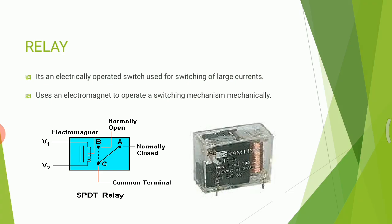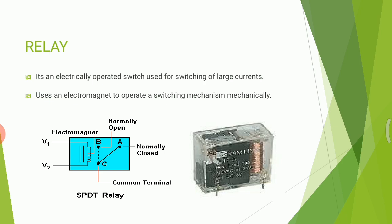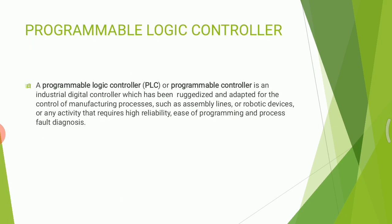The stepper motor is used to tilt the solar panel. It is an electromechanical device which converts digital pulse inputs to incremental shaft rotation, used for precision positioning control applications, controlled by a series of electromagnetic coils. A relay is a controllable, electrically operated switch used for switching large currents, using an electromagnet to operate a switching mechanism mechanically. A PLC — Programmable Logic Controller — is an industrial digital controller adapted for control of manufacturing processes such as assembly lines and robotic devices.